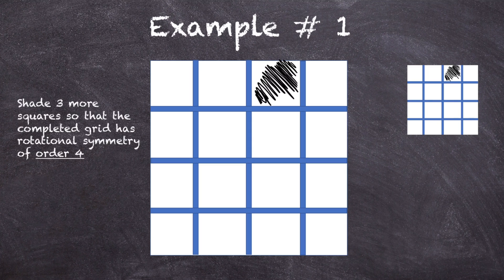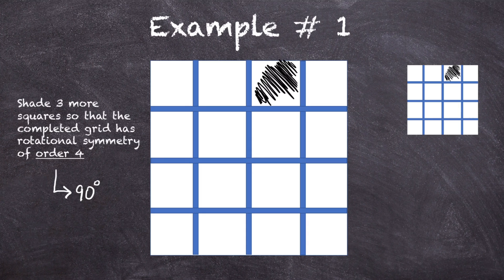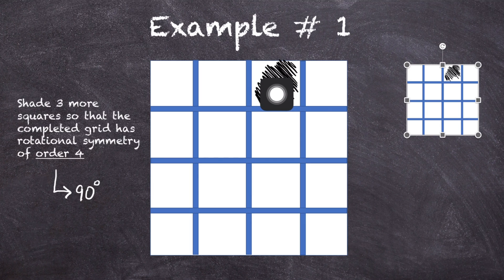Here is a past exam question. We have to shade three more squares so that the completed grid has rotational symmetry of order 4. This means I need to get the exact same shape after every 90 degree rotation. To solve this, we follow the shaded region and see where it ends up once we rotate it 90 degrees clockwise or anti-clockwise.